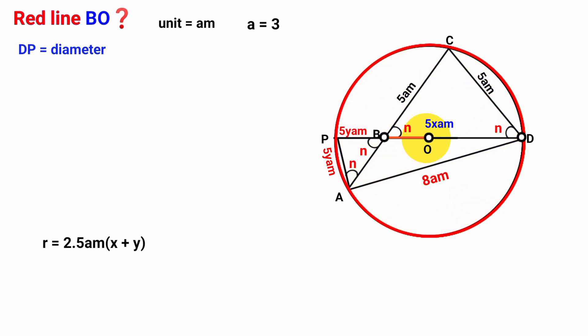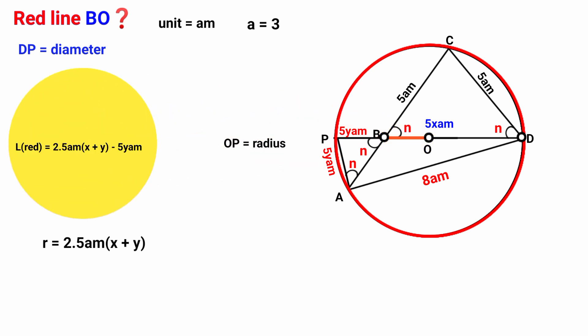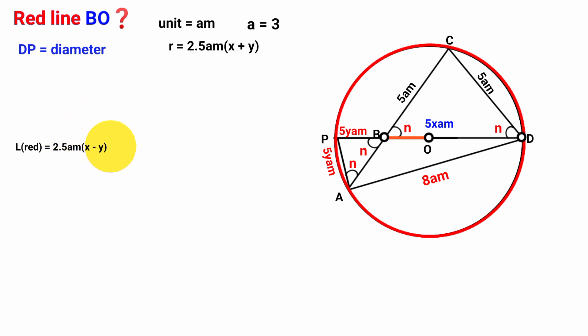Now we know from this center to this point is a radius. It is divided into this line BO, which is the red line in question, and this line BP, which is 5YA meters in length. So if we subtract 5YA meters from the radius, we are left with the length of line BO. So red line equals 2.5A(X + Y) minus 5YA. This 5 is the same as 2 times 2.5, so we factor out 2.5A. It becomes 2.5A times (X + Y − 2Y), which simplifies to 2.5A times (X − Y).